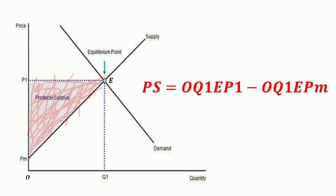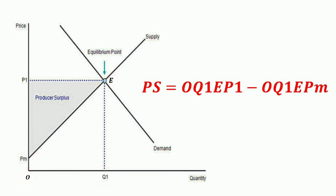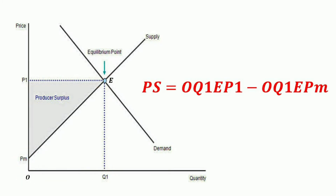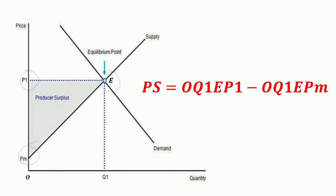In this diagram, OQ1EP1 represents the area of the entire rectangle under the price line, and OQ1EPM represents the area under the supply curve. Therefore, the producer surplus is equal to OQ1EP1 minus OQ1EPM, which is the area PEQ1.